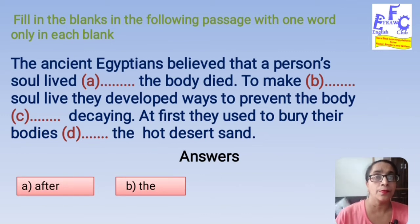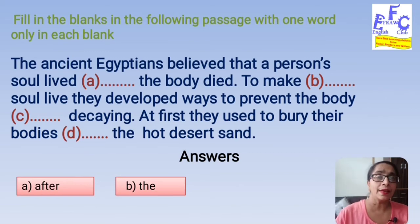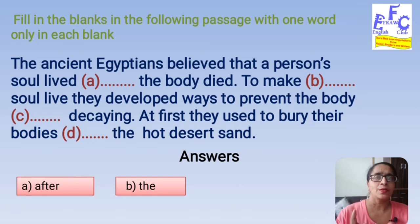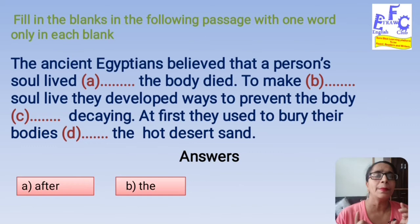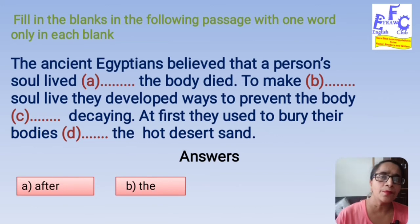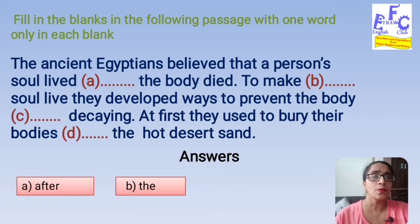To make the soul live, they developed ways to prevent the body from decaying. So what do they do to prevent the body from decaying? We will be using a preposition giving the phrasal verb 'prevent from.' 'Prevent from' means to stop that thing from happening. So the blank should be filled with 'from' — they developed ways to prevent the body from decaying.